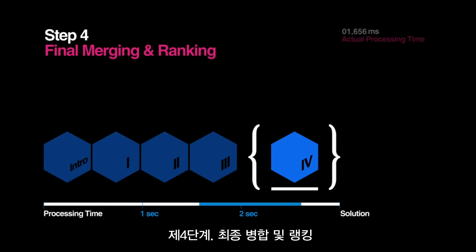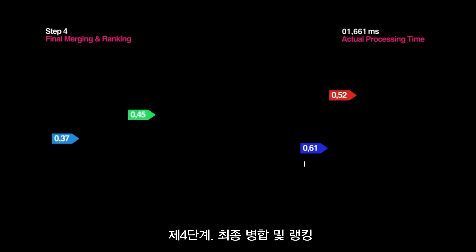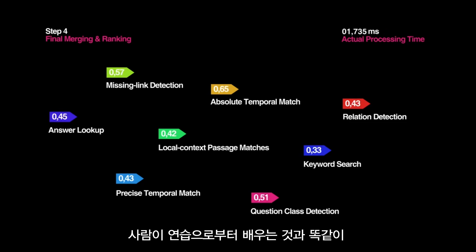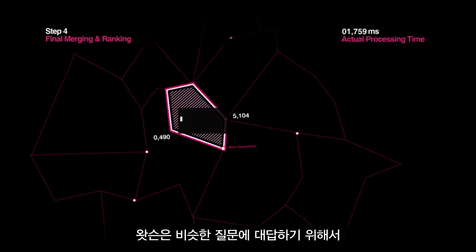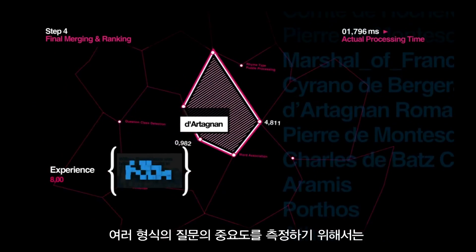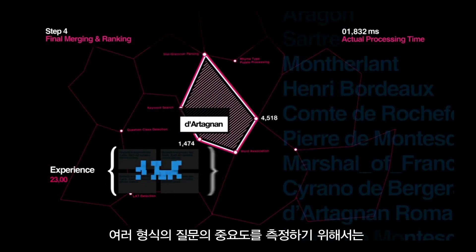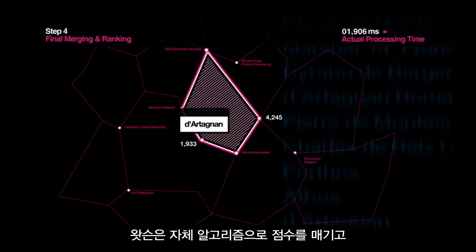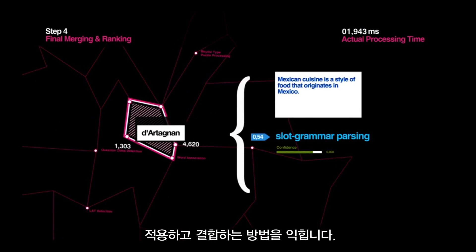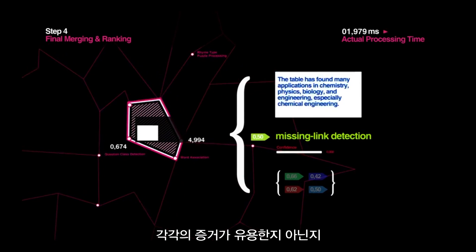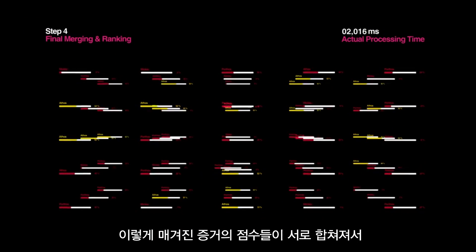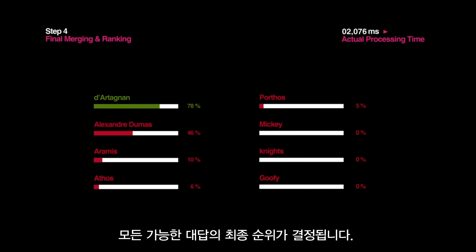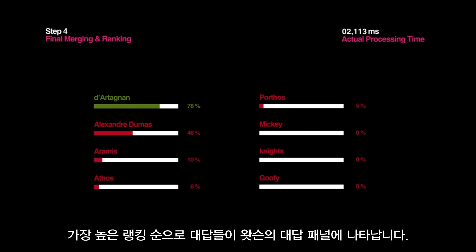Step 4: Final Merging and Ranking. Different types of evidence are better at solving different types of questions. So just like a person learns from practice, Watson uses the experience it gains from trying to answer similar questions in order to weigh the importance of its different types of evidence. It's not about memorizing trivia. By playing thousands of practice games, Watson learns how to weigh, apply, and combine its own algorithms to decide the degree to which each piece of evidence is useful. These weighted evidence scores are merged together to decide the final rankings for all possible answers, with the highest ranked answers appearing in order on Watson's answer panel.